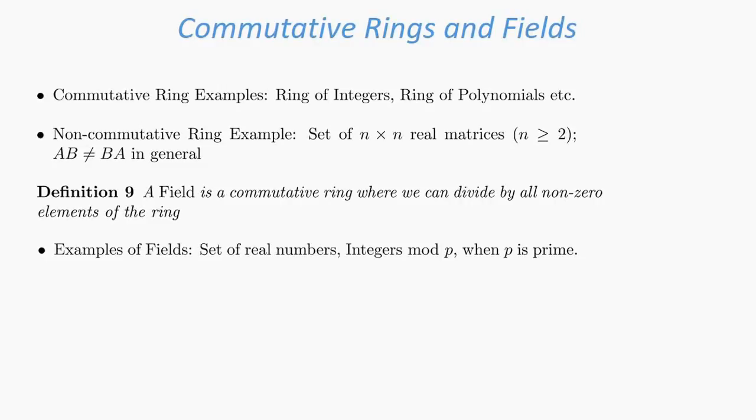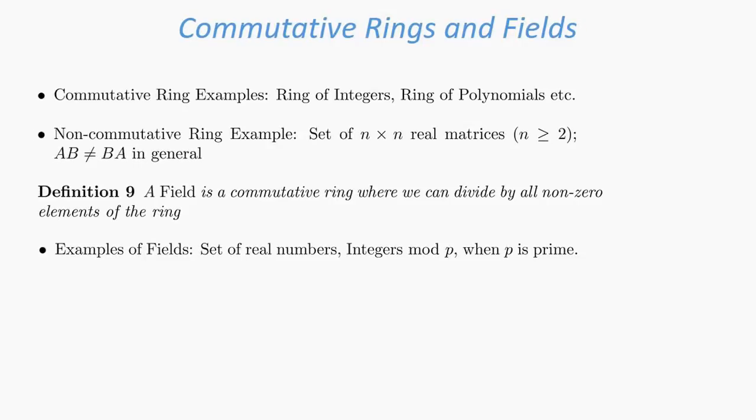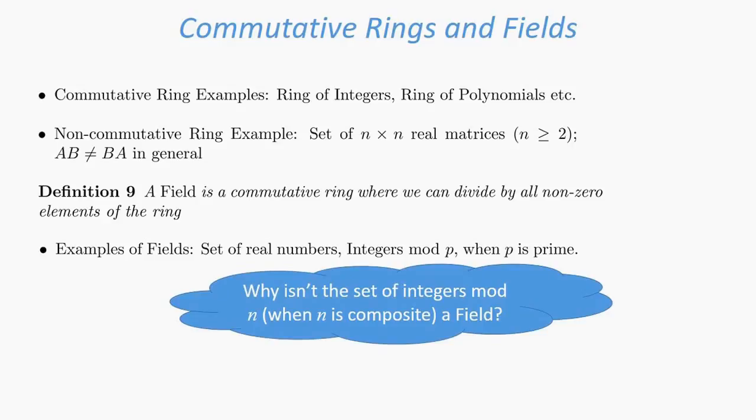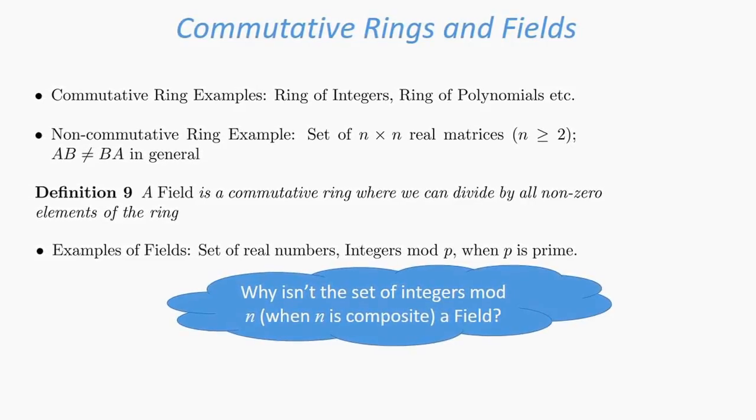Note that every non-zero element has an inverse. The question is: why isn't the set of integers modulo n, when n is composite, a field? I'll let you think about this for a moment. We have already seen the answer to this.